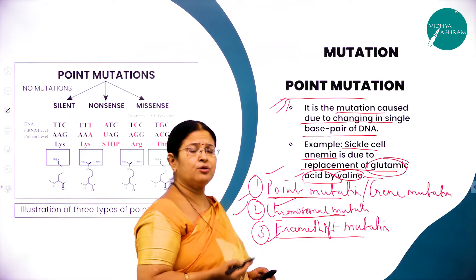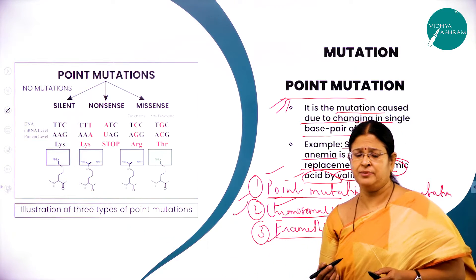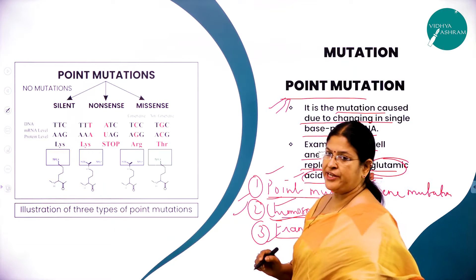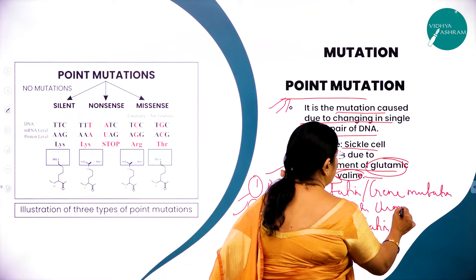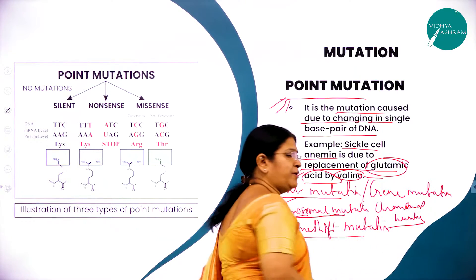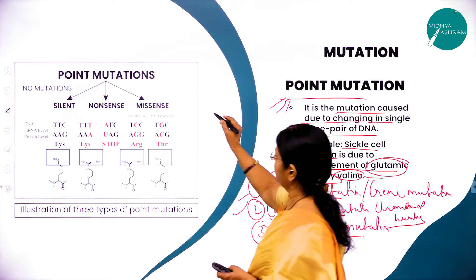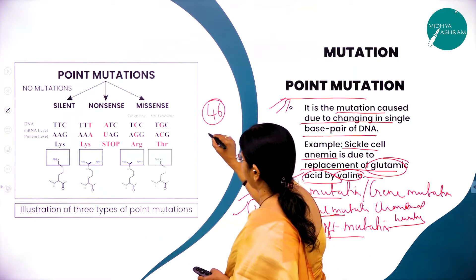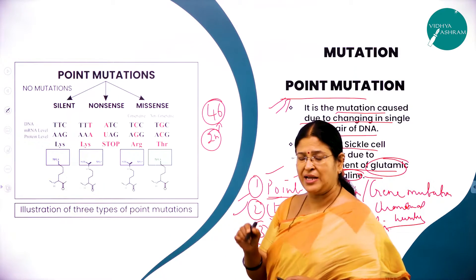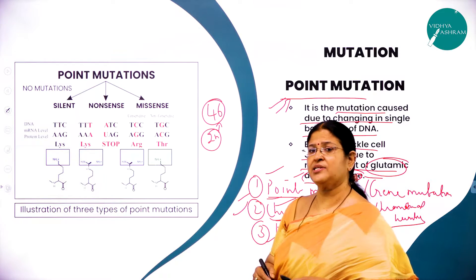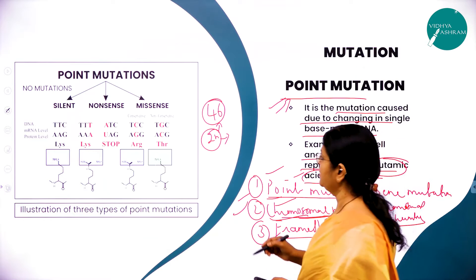Chromosomal mutation takes place at the chromosomal level — specifically at the chromosomal number. As we know, the nucleus of a cell will have a balanced set of chromosomes. For example, in human beings the chromosomal number is 46, which is called the diploid number.